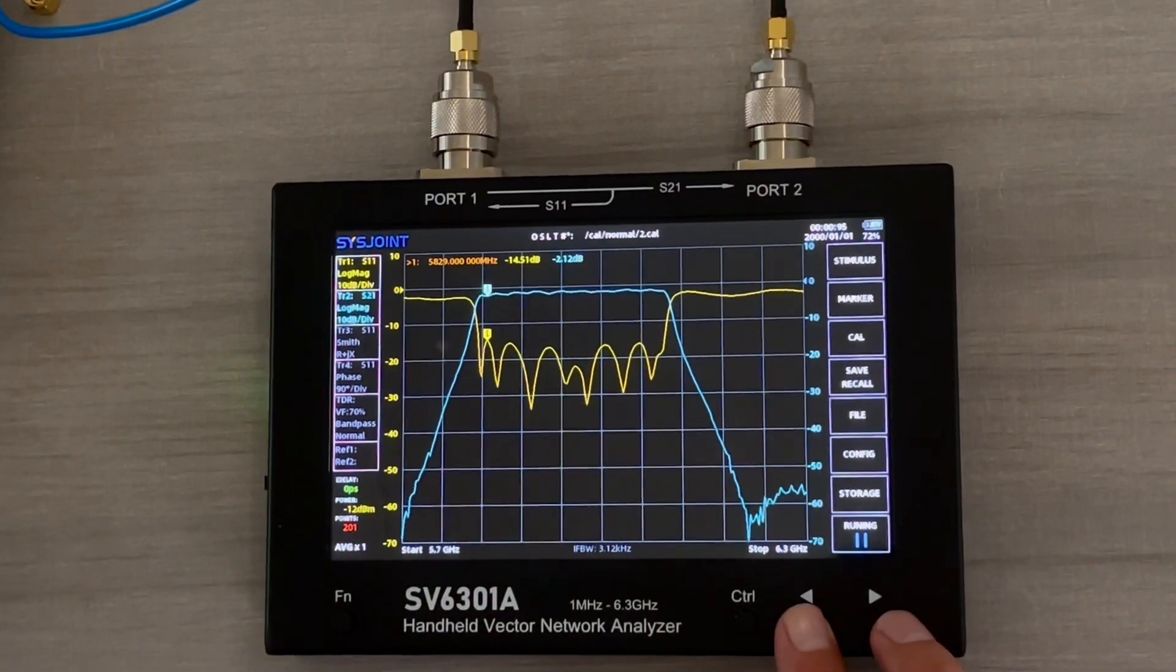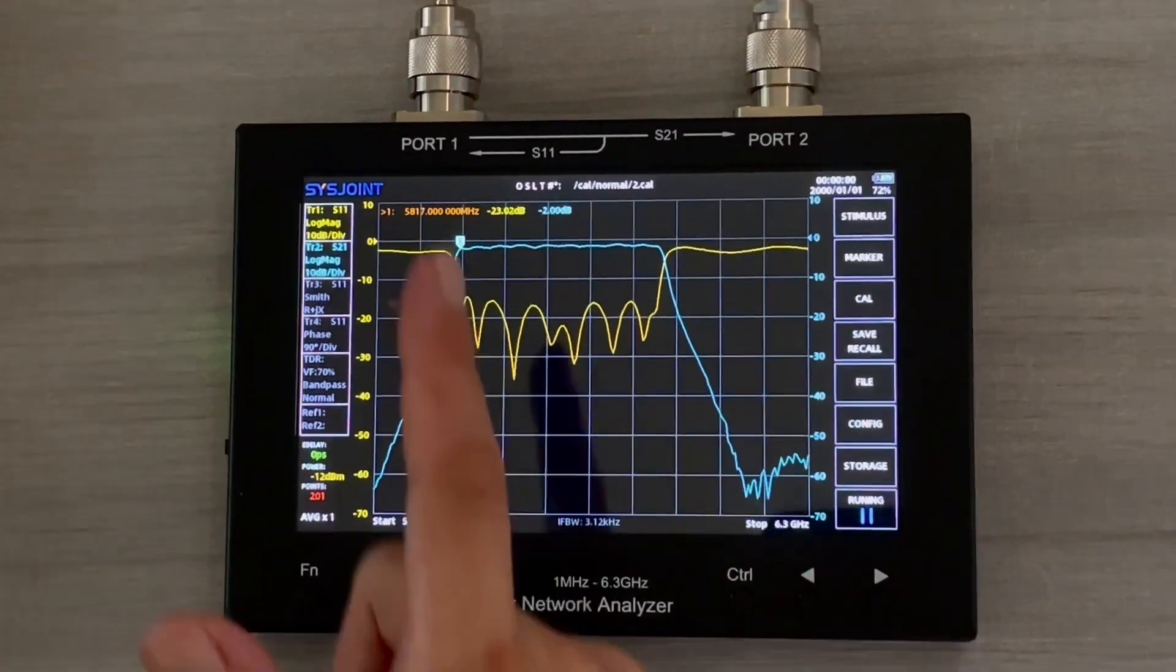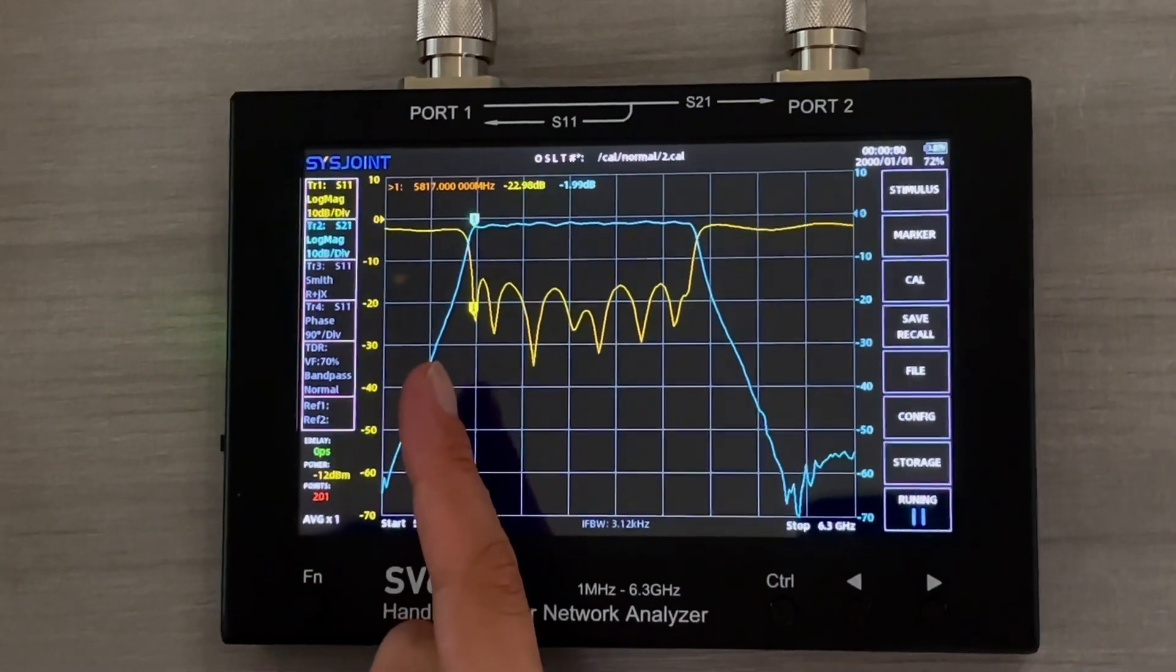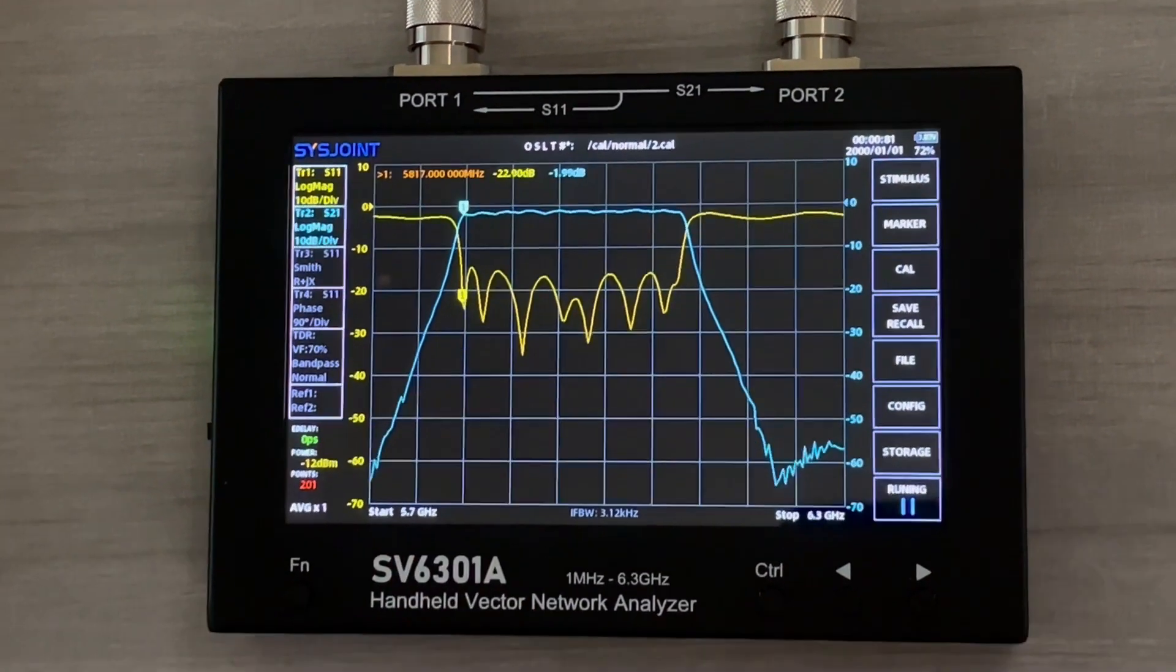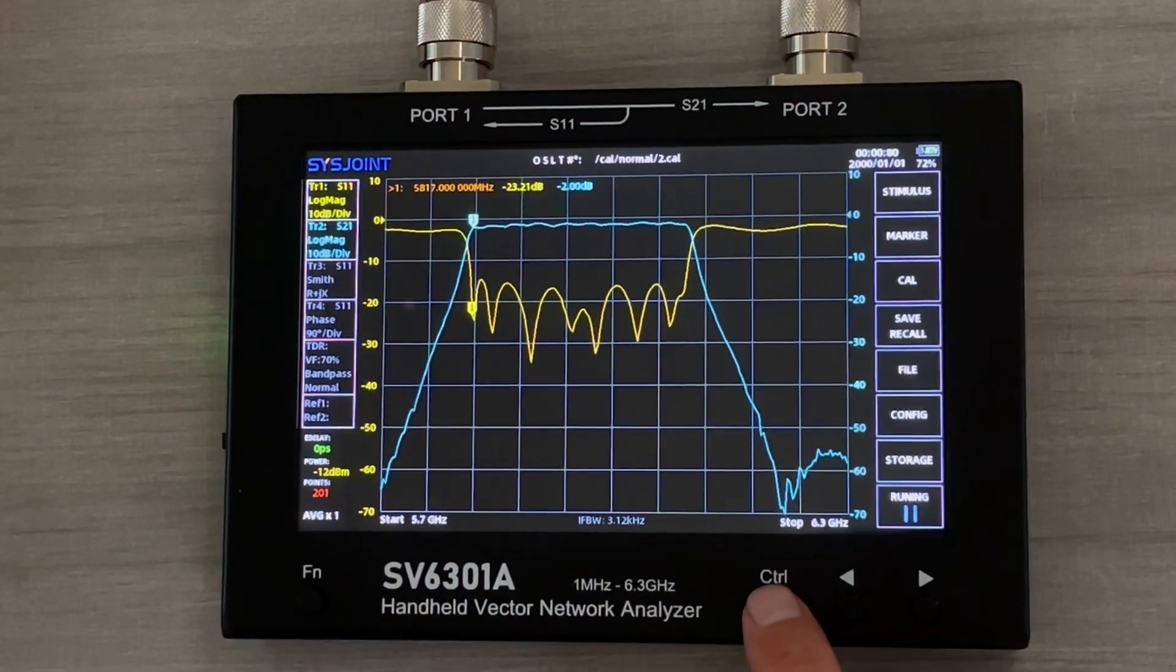And now we can take a look at the figure. We can see that the filter starts working around marker one, which is 5.8 gigahertz. We want to enable another marker and see the stop frequency. We double click the control button.